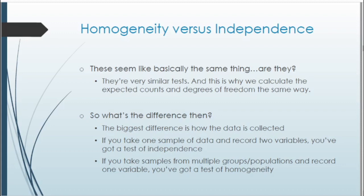Let's delve deeper into homogeneity versus independence, since they seem similar. Looking at your formula card, between these two tests the expected counts and degrees of freedom are actually calculated in the same way. The biggest difference is how the data ends up being collected. If we take one particular sample and record two different variables, we're looking at a test of independence. If we take multiple samples and record one variable, then we have homogeneity. It comes down to what question we're trying to answer: differences in variables is independence, while differences or similarities between populations is homogeneity.